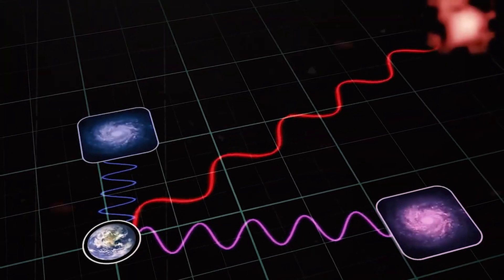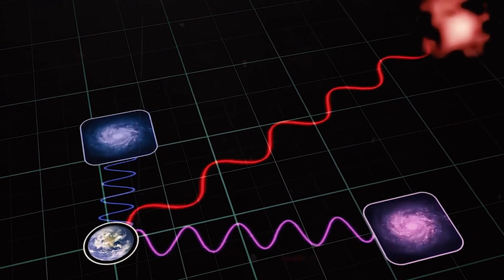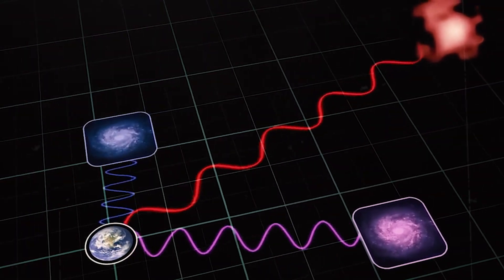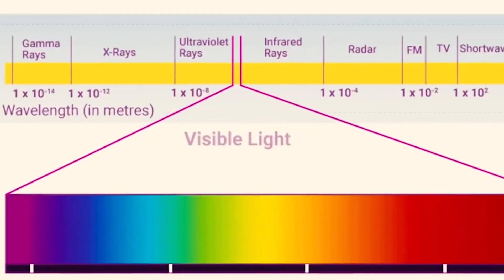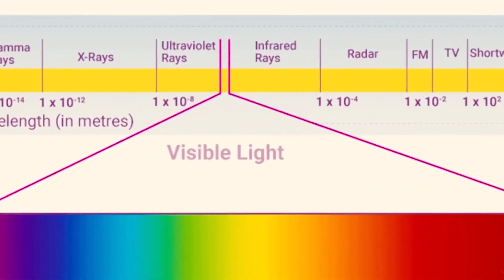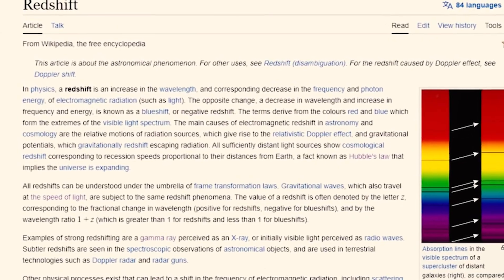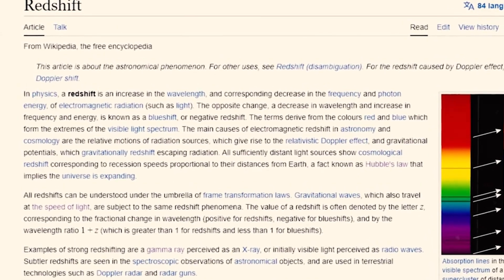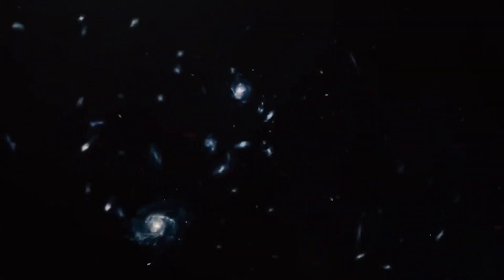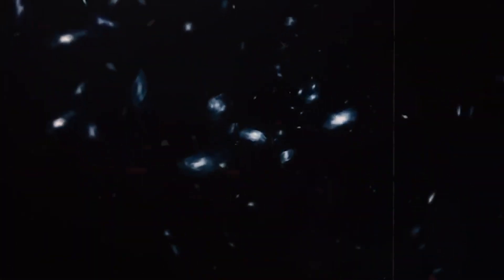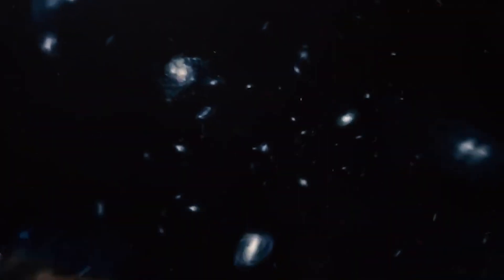This also means that the light that we see from them has been stretched by the expansion of the universe, shifting it from the visible to the infrared spectrum. This is called the redshift, and it is a measure of how far and how old the objects are. The higher the redshift, the farther and the older the object.